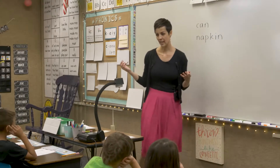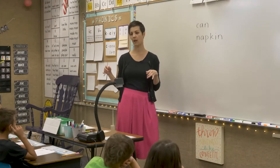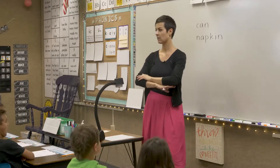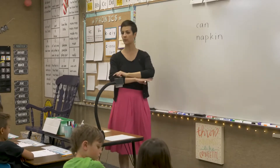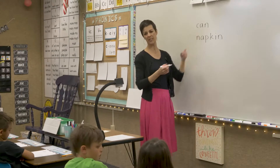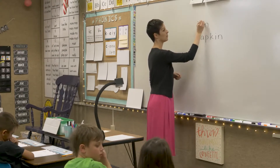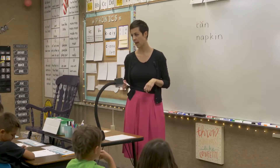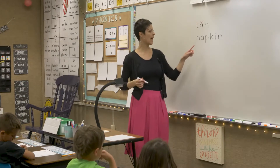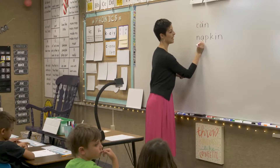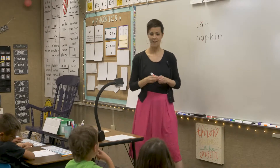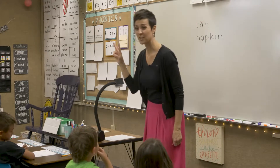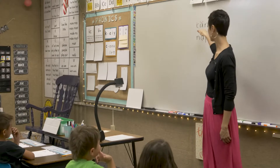I could code the word can super easily. All I have to do is breathe above the A and put my K back on my C. That's all I have to do and it's done. But in napkin, you might notice I have an A and an I. Because I have an A and an I, it tells me I'm going to have two syllables and I have to code it a little bit differently than I would just code the word can.